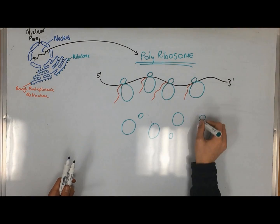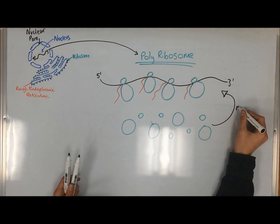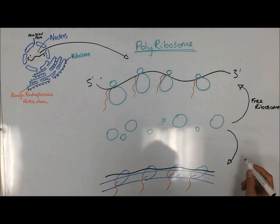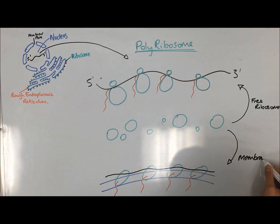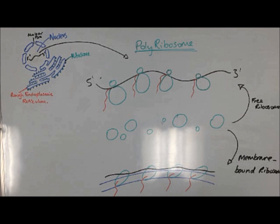There are two populations of polyribosome that share the same pool of ribosomal subunits: free ribosomes and membrane-bound ribosomes. It is important to note that no ribosome is permanently bound to the ER. They are only associated with the RER temporarily in protein synthesis. Free ribosomes translate mRNA into proteins that are taken up by the cytoplasm and other organelles for the functioning of the cell.